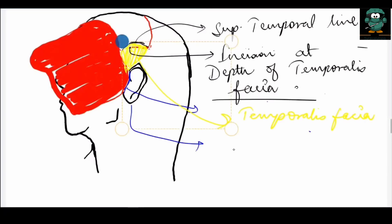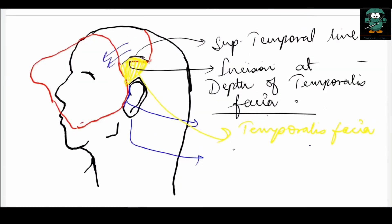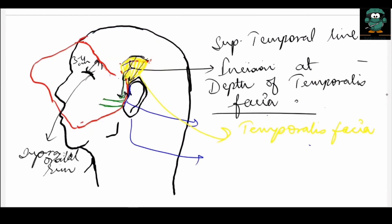The flap is then dissected anteriorly until a point three to four centimeters superior to the superior orbital rim. As the flap is dissected up to this point, the pericranium becomes visible. A horizontal incision is then placed extending from one superior temporal line to the other, above the pericranium, and the periosteum is dissected up till the supraorbital rim.